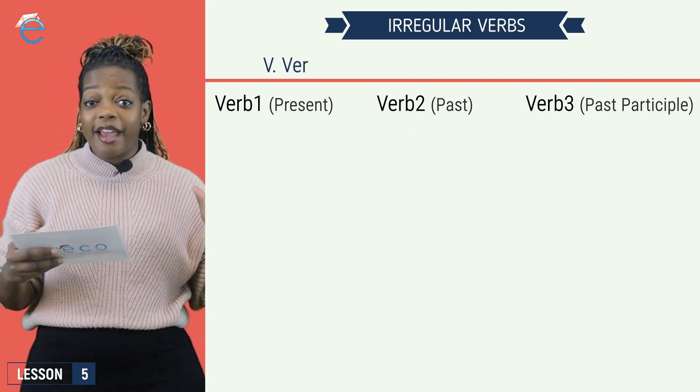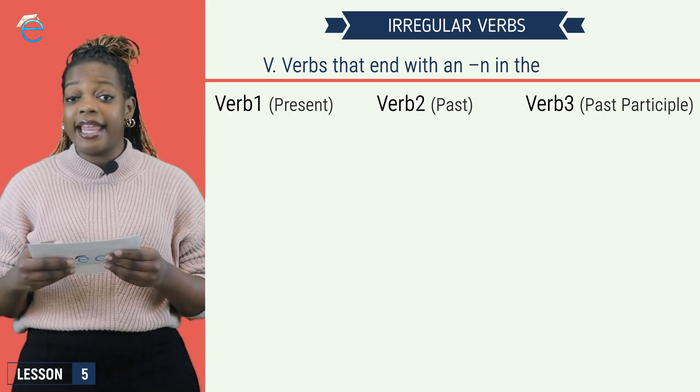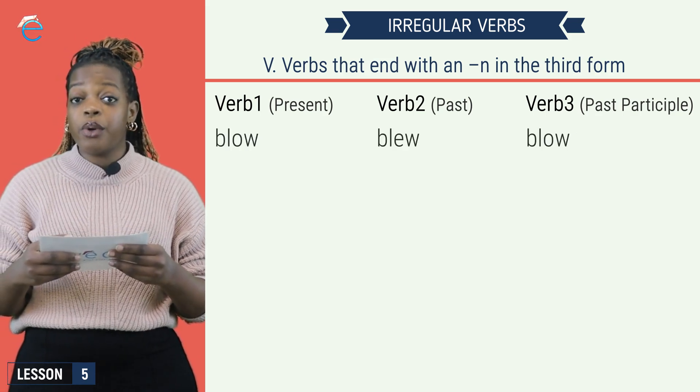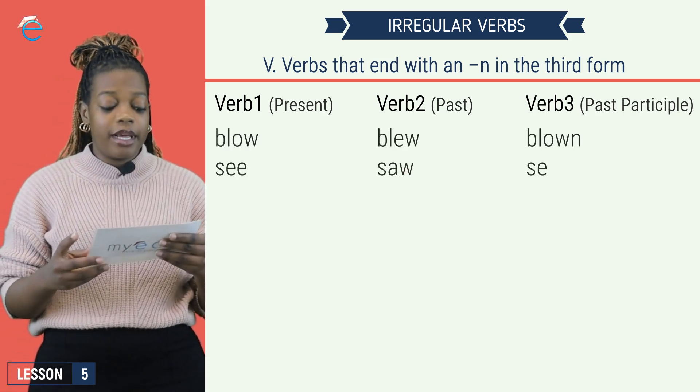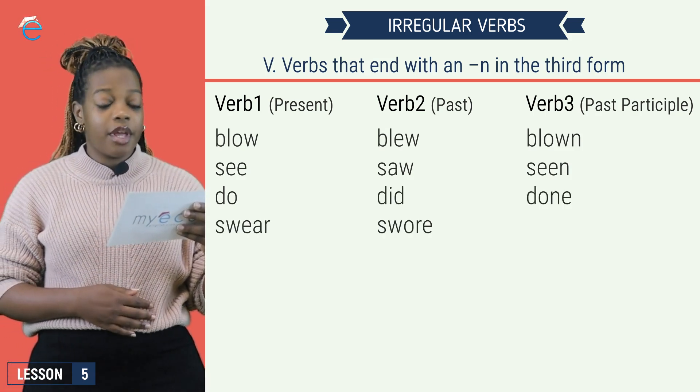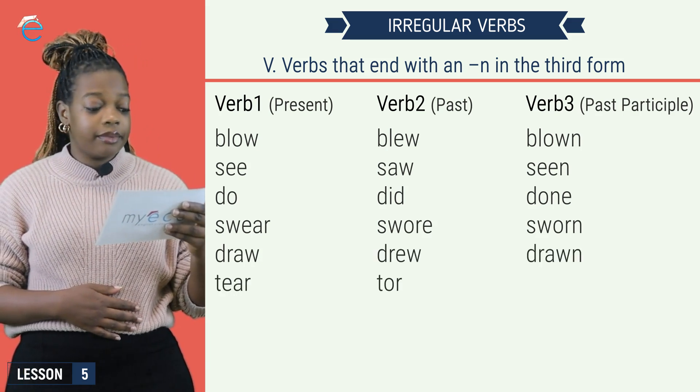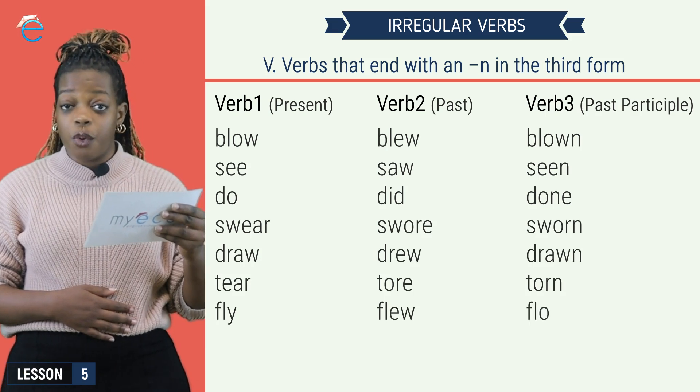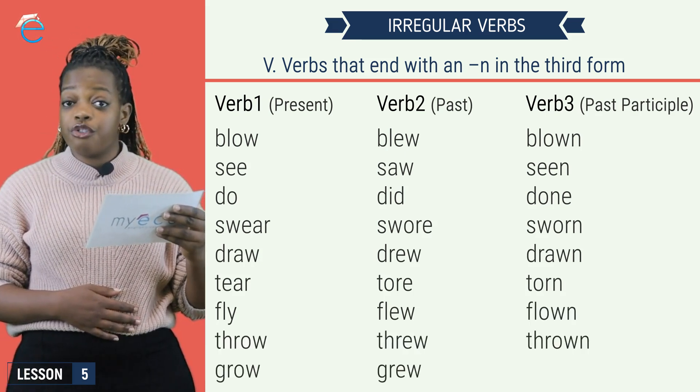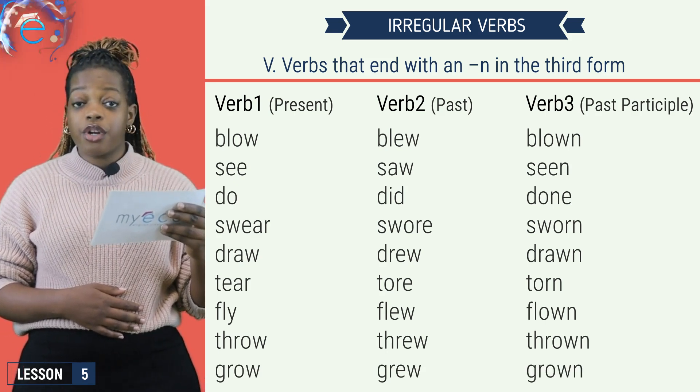Group 5 are irregular verbs that end with an N in their form 3. Blow, blew, blown. See, saw, seen. Do, did, done. Swear, swore, sworn. Draw, drew, drawn. Tear, tore, torn.